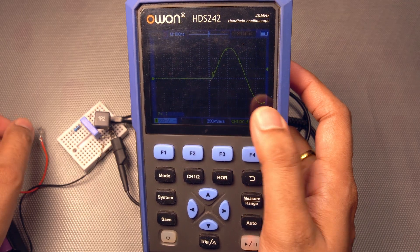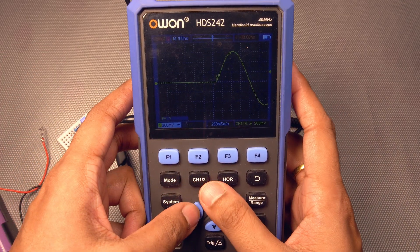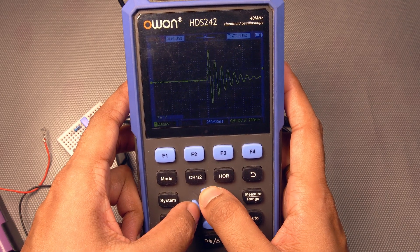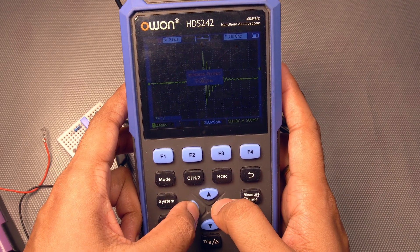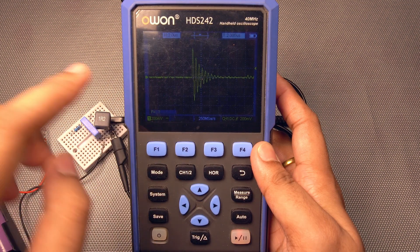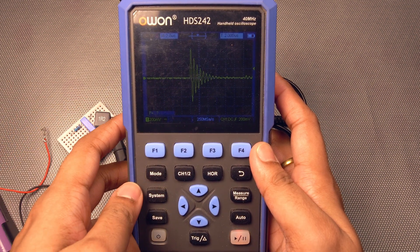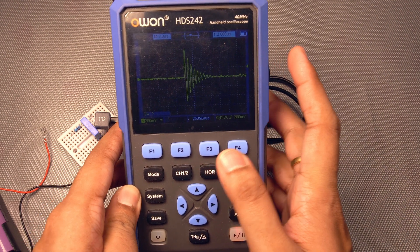Okay, so it has captured the wave. Now, let's increase the time division. Okay, so this is the oscillation that we have got and we will calculate the frequency with this.